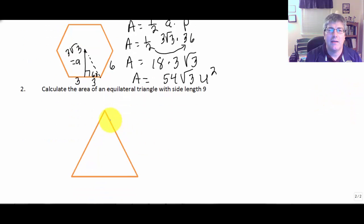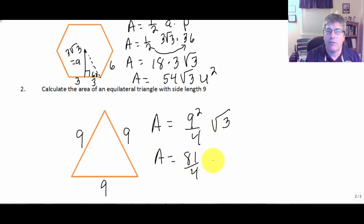And finally, calculate the area of an equilateral triangle with side length of 9. I don't even have to figure out base times height. I can just use my formula. Side squared over 4 times the square root of 3. So, I get 81 fourths square root of 3 units squared. And that's the area of that equilateral triangle.